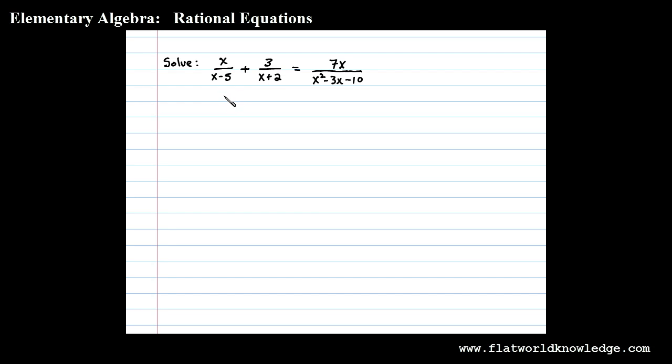Here we're asked to solve a rational equation. The first step is to factor the denominators. In this case we have a trinomial on the right side. We'll begin by writing two blank parentheses. x squared factors as x times x. The factors of 10 that add up to negative 3 are 2 and 5.